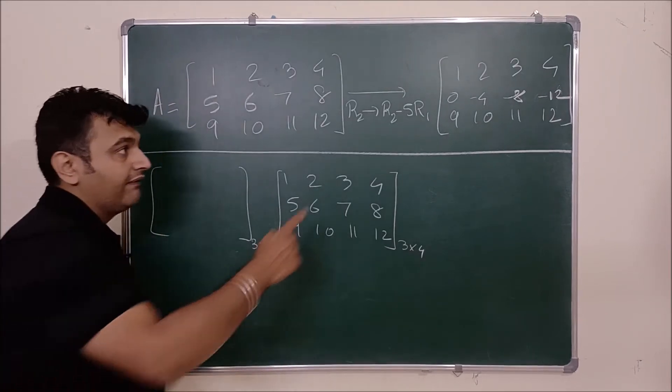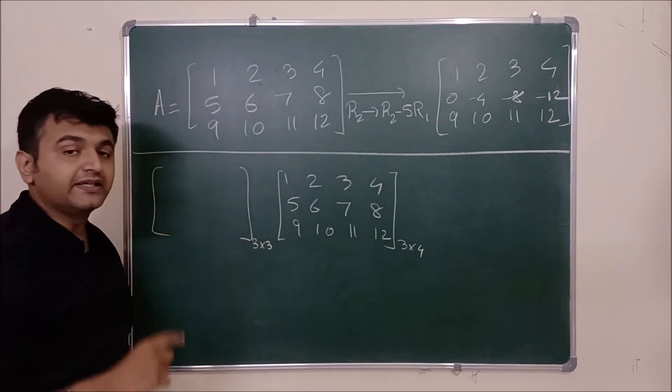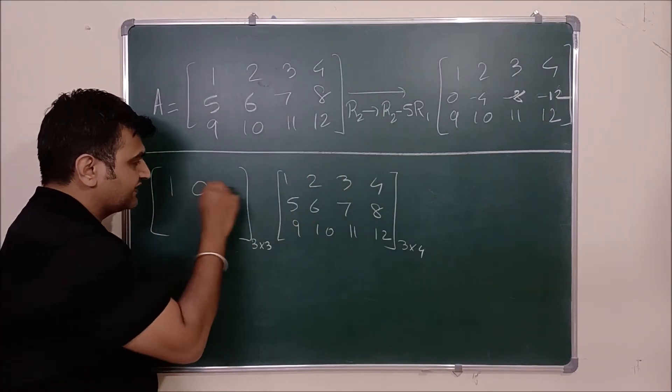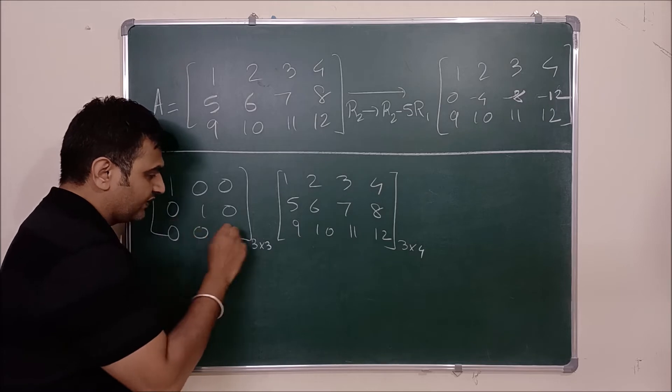Now instead of taking the identity matrix, I will apply this operation on the identity matrix. So what is identity matrix? 1 0 0, 0 1 0, 0 0 1.